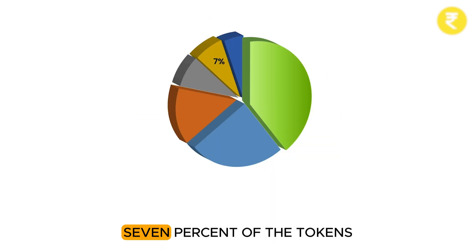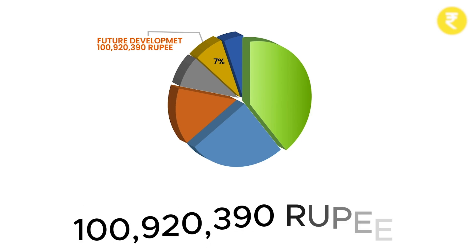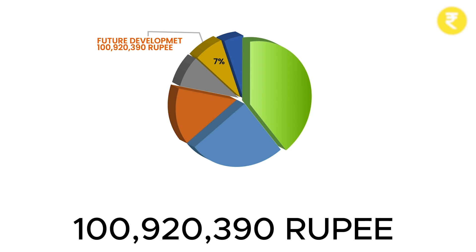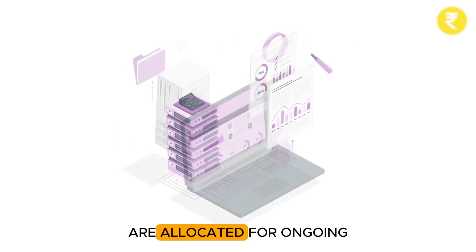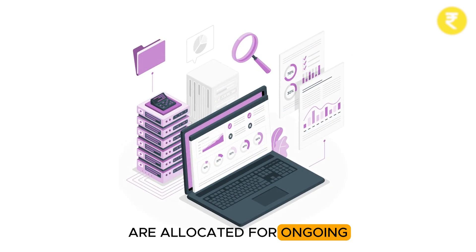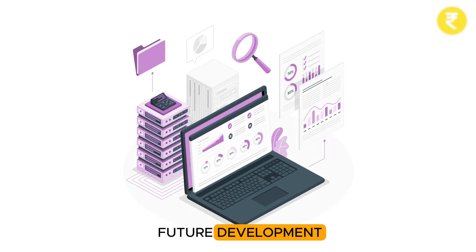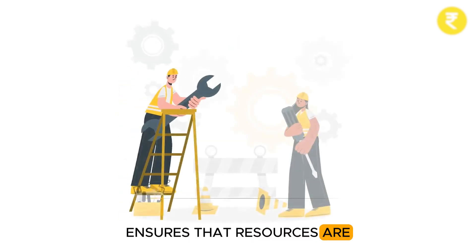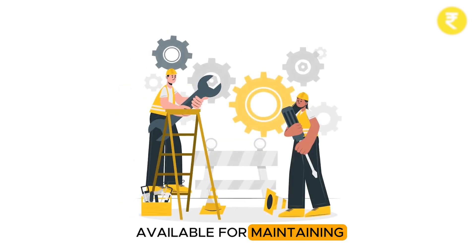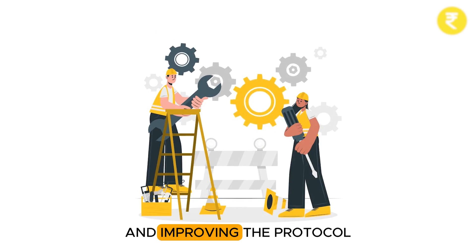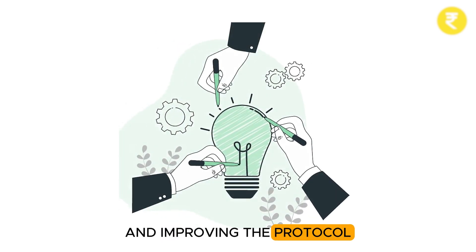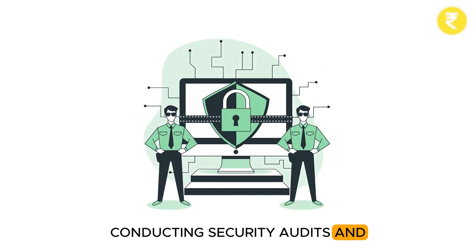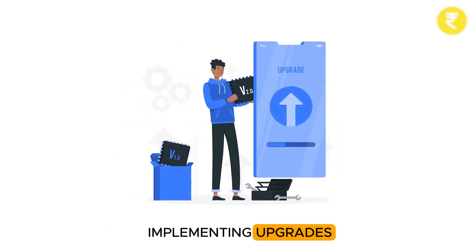7% of the tokens, totaling 100,920,390 rupee tokens, are allocated for ongoing future development. This fund ensures that resources are available for maintaining and improving the protocol, conducting security audits, and implementing upgrades.